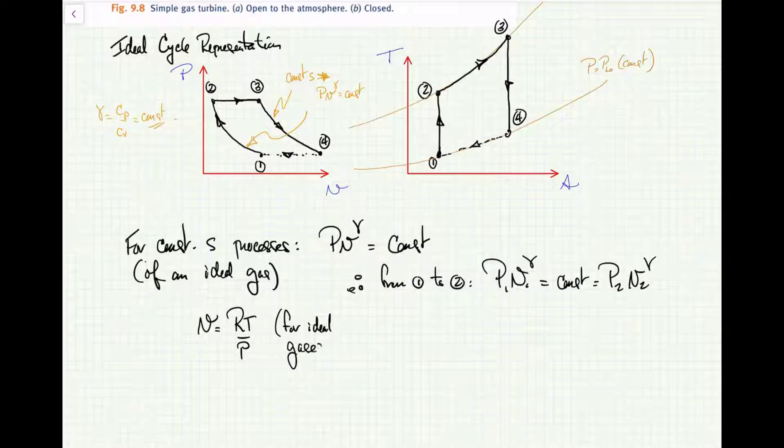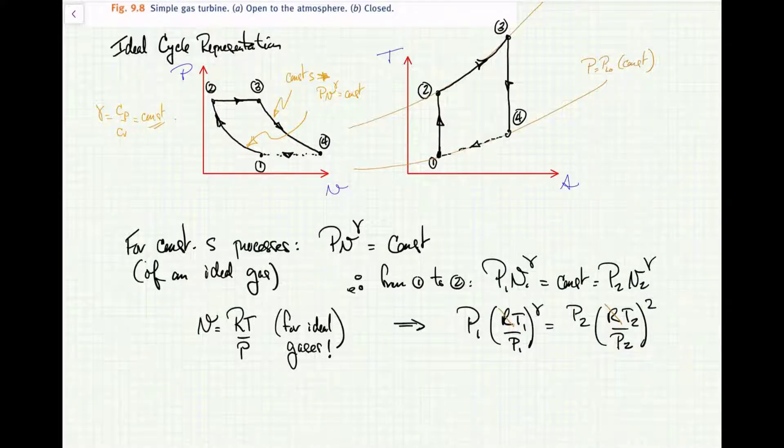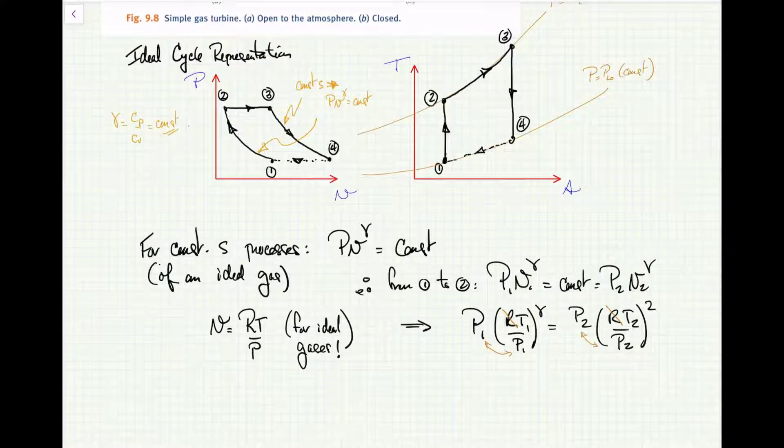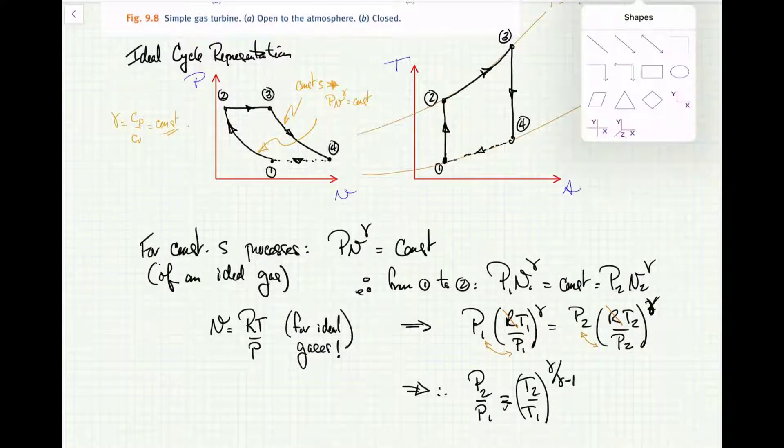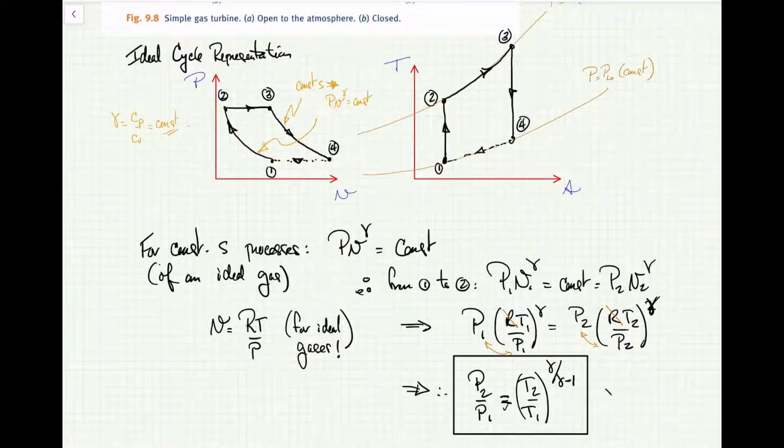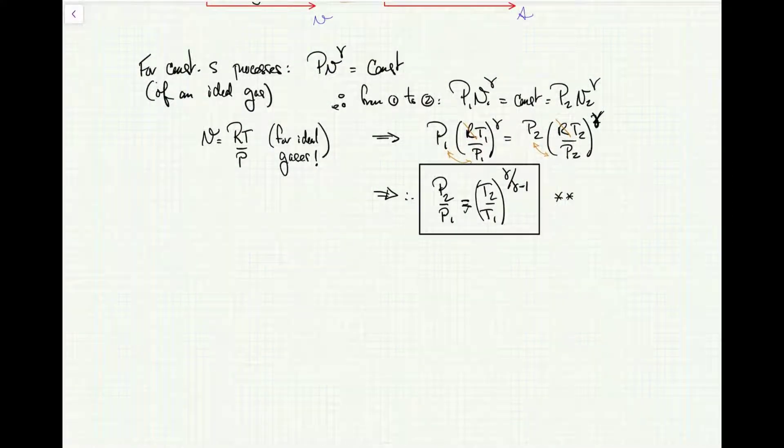Substituting that back in—where R is the specific gas constant, R_u divided by the molecular mass of the gas—putting the pieces together, rearranging, and canceling out the R's, we get an expression that relates the pressure to the temperature at both ends of the compression and expansion steps. We'll call that equation 1. This analysis is very important—a very important result that's going to come up in the thermal efficiency of the gas turbine as we'll see in a moment.